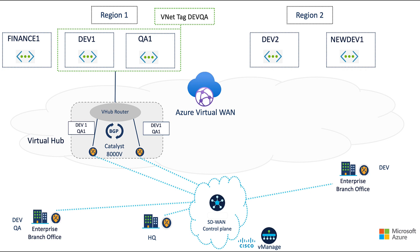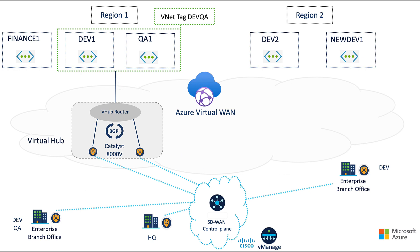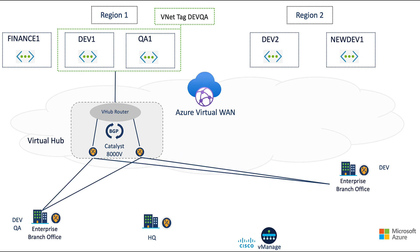Besides allowing for massive scaling and tighter key security, we can use connectivity intent and centralized policies to control access and direct traffic flows. The tagged VNet routes are sent to our fabric, but only advertised to our select branches. Likewise, our branches will send their routes back to Azure. This will form data plane connectivity, allowing our branches access to our VNet workloads and vice versa.